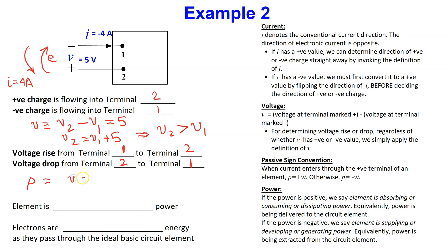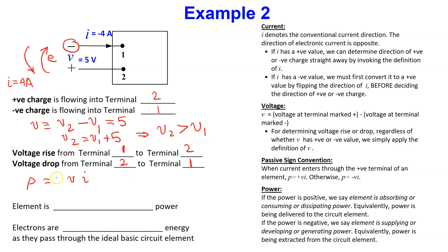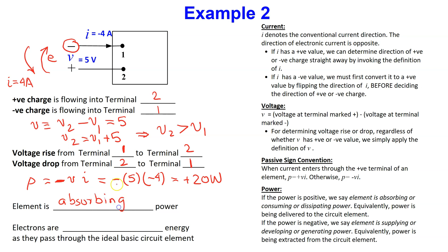To determine the power, power is given as voltage times current. The conventional current is entering the terminal marked minus, so power is written with a minus sign. Substituting the values: minus 5 volts times minus 4 amps. The two negatives become a plus, giving plus 20 watts. Since the final answer is positive, we say that the element is absorbing power.